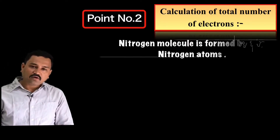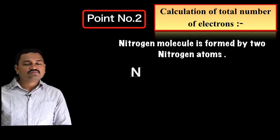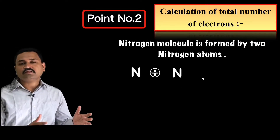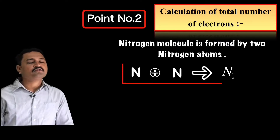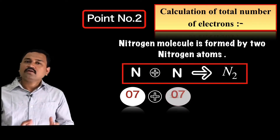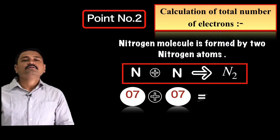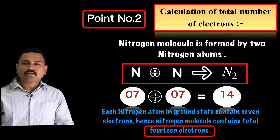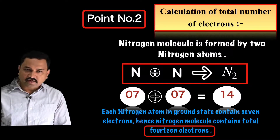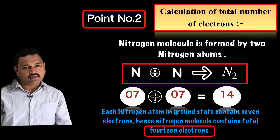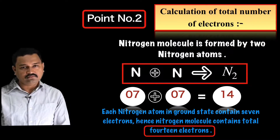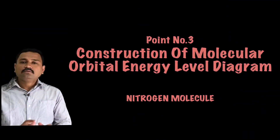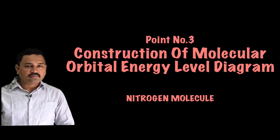Point number two: the total electrons in the nitrogen molecule. The nitrogen molecule is formed by two nitrogen atoms, and each nitrogen atom contains seven electrons, hence there are a total of 14 electrons in the nitrogen molecule.